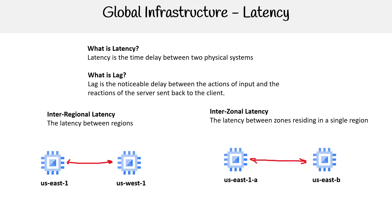I just want to generally give you an idea of the latency in milliseconds. This isn't going to be exact, because I honestly couldn't find something definitive from Google. There are benchmarks out there and they vary. But generally, between two regions you could see a worst case of around 500 milliseconds — so that's in the triple digits. And for inter-zonal latency, maybe 10–50 milliseconds, so double-digit milliseconds.